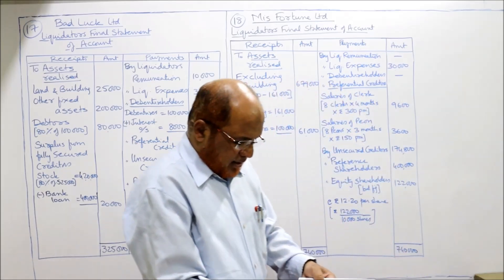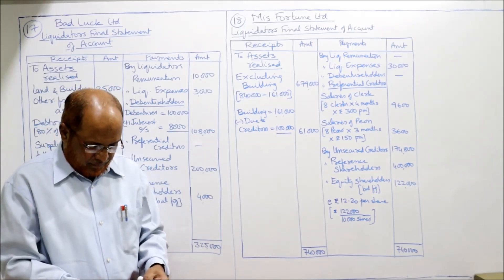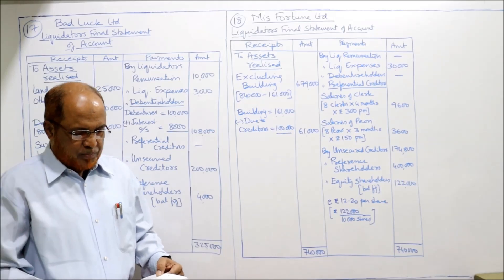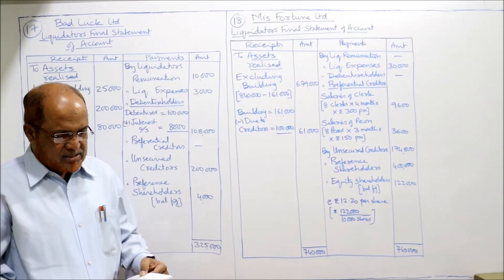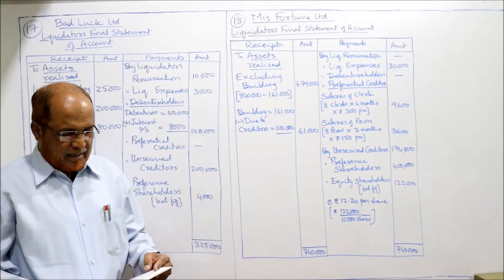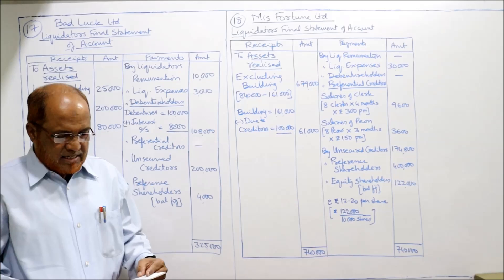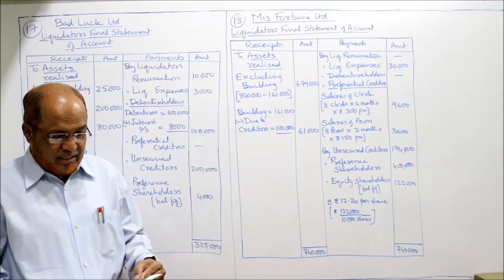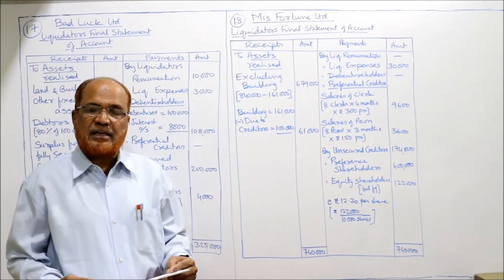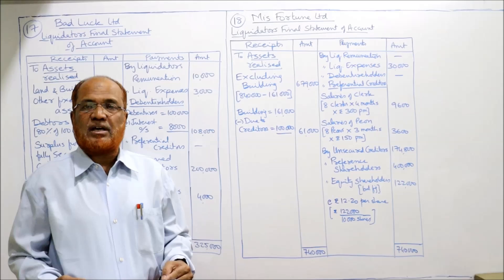Now problem number 18. Misfortune Limited went into voluntary liquidation. Share capital: 8% preference shares — 4,000 of 100 each = 4 lakh rupees; 10,000 equity shares of 100 each, rupees 60 paid up. Assets including building realized 8,40,000. Liquidation expenses 30,000. The company took a loan of 1 lakh rupees from Patel against mortgage of building, which realized 1,61,000.